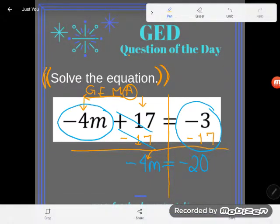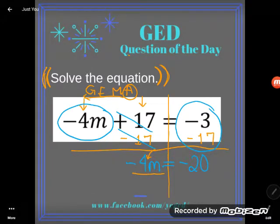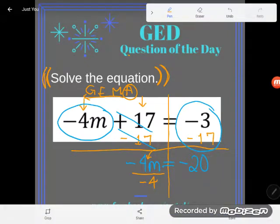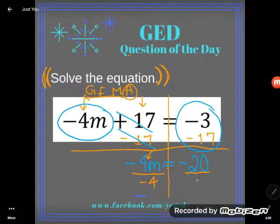Those things are not adding and subtracting. They are multiplying. This is a negative 4 multiplying with m. So I'm going to get rid of it by doing the opposite of multiplying. The opposite of multiplying is dividing. And again you can do whatever you want to an equation as long as you do it to both sides.